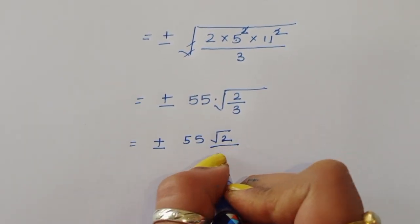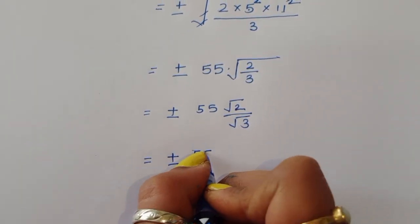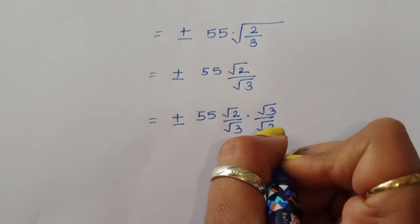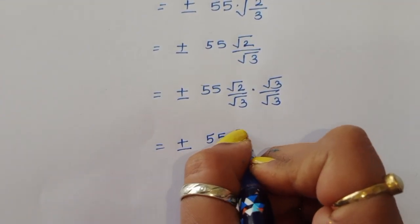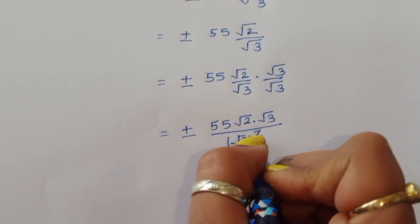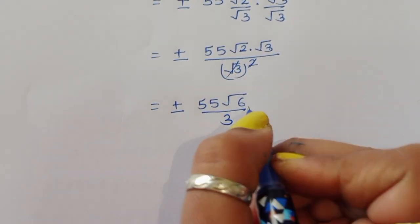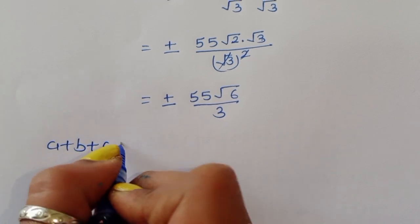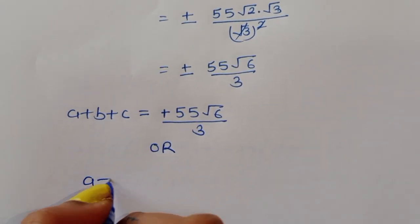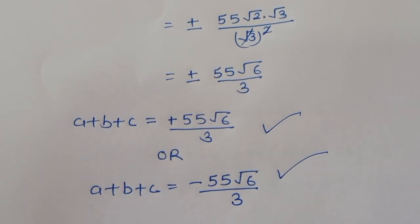Taking square root of both sides: A plus B plus C equals plus or minus the square root of 6050/3. Factoring 6050 gives 2 × 5² × 11², so this simplifies to plus or minus 55 times the square root of 2/3. Rationalizing the denominator gives A plus B plus C equals plus or minus 55√6 / 3.